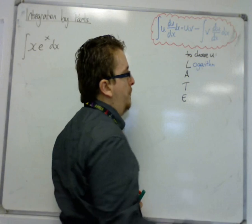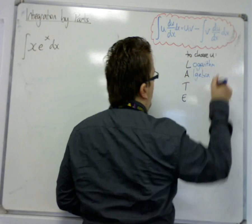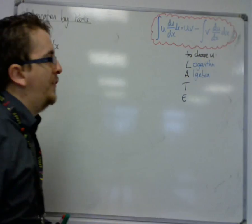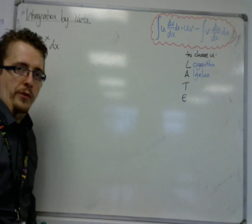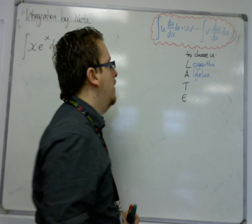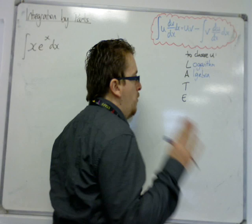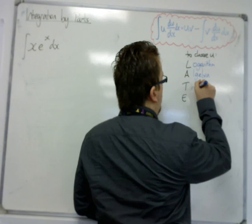If there are no logarithms, then check to see if there's any algebra, so any single x's or x squared's, so polynomials really. If there's any of that, then that should be your u. If there's no logarithms, there's no polynomials, then the next up would be trigonometry.